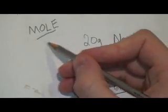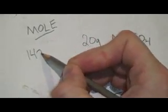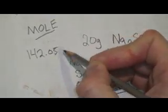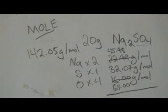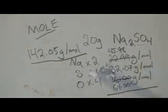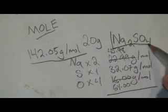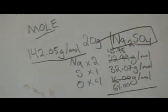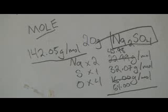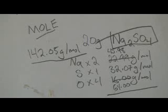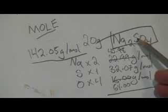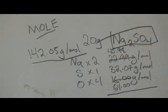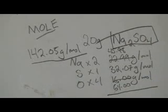The grand total is, if you are ready to go, 142.05 grams per mole. Now 142 grams per mole is the atomic mass of sodium sulfate. So one mole of this stuff, ladies and gentlemen, one mole of sodium sulfate will have a mass of 142.5 grams.